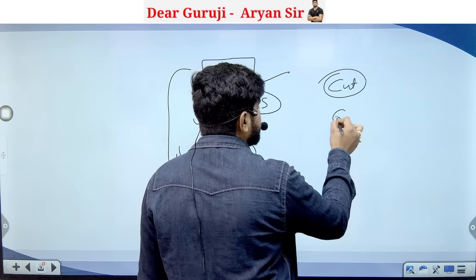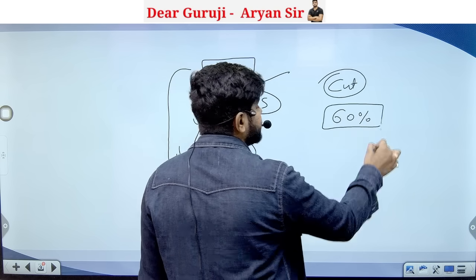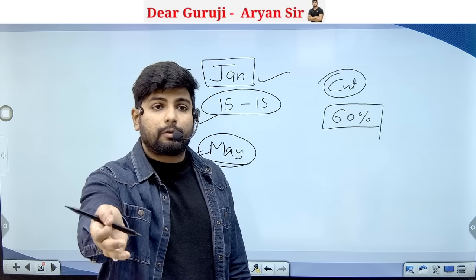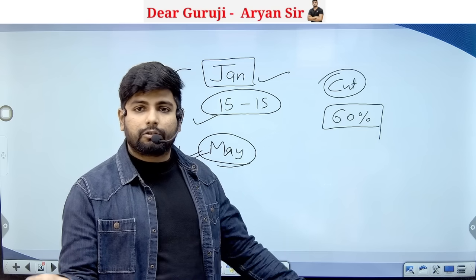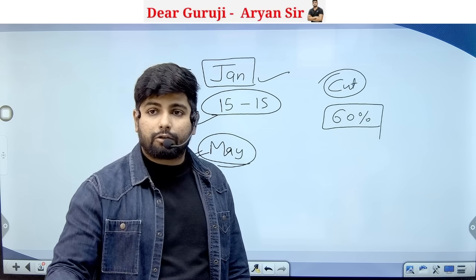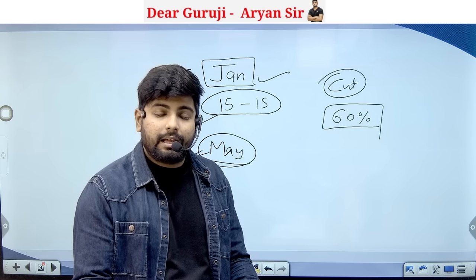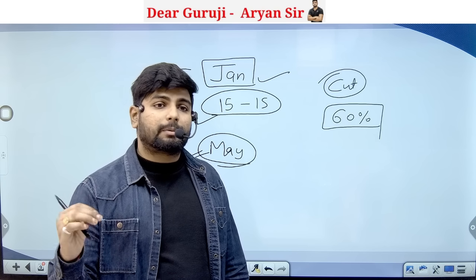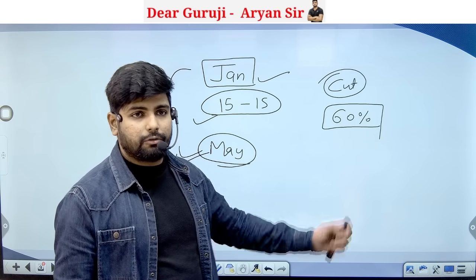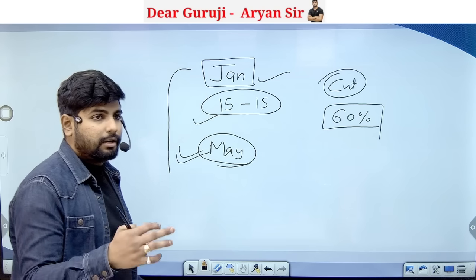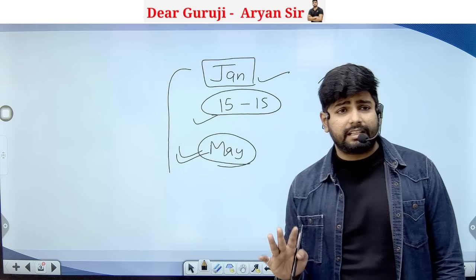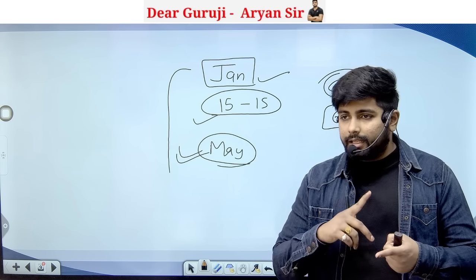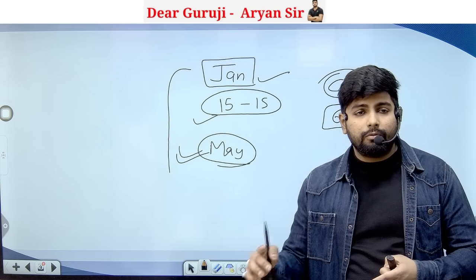This means you need a minimum of 60% marks. For example, if you have 400 marks, you need to score 240 to have a chance at a government seat. If you have 120 marks, you need to score 72 to 75 plus to have a chance. As for books, there is no need to buy them because I am giving you PDFs, test series, and practice sets in the batch. I am also giving you theory study materials.